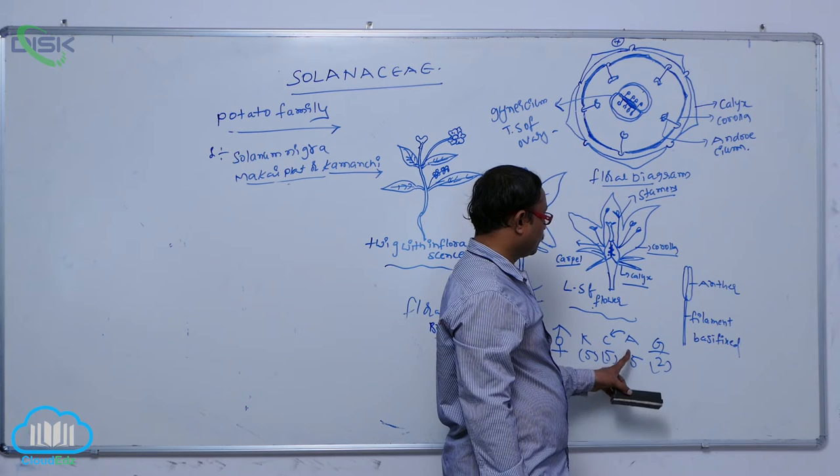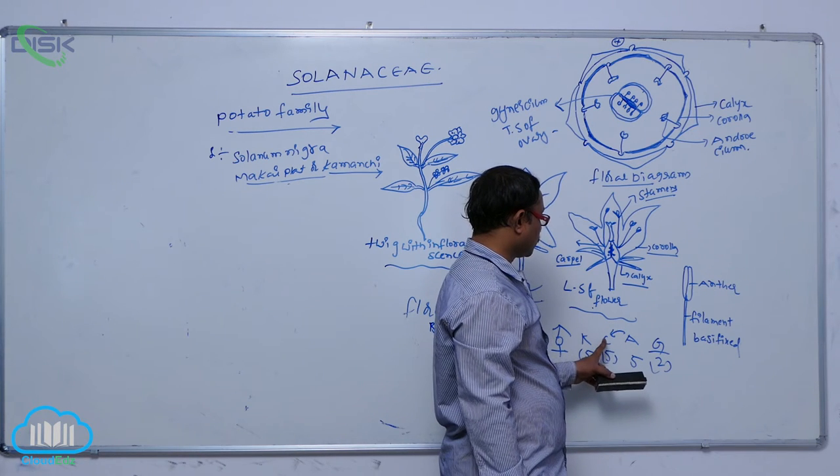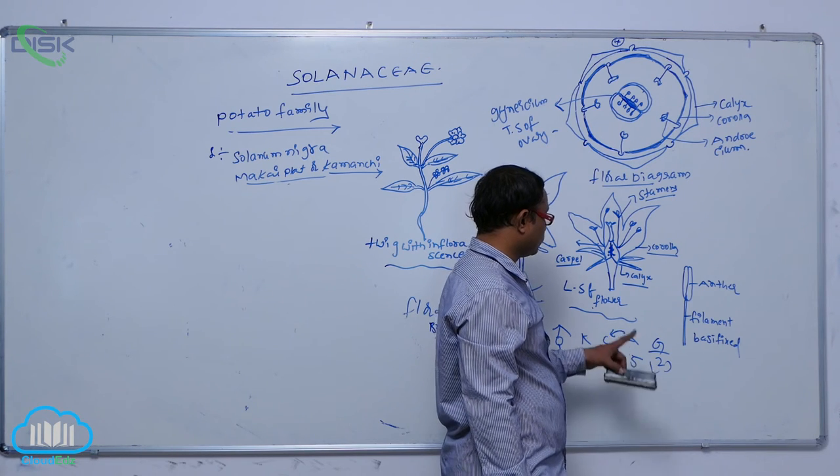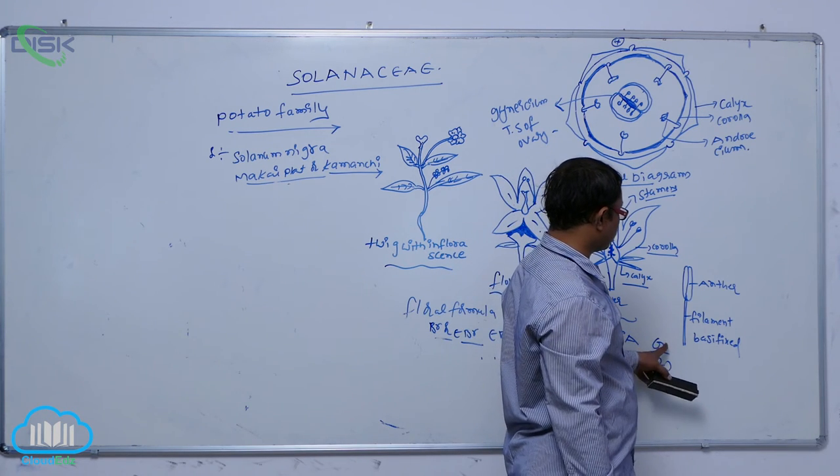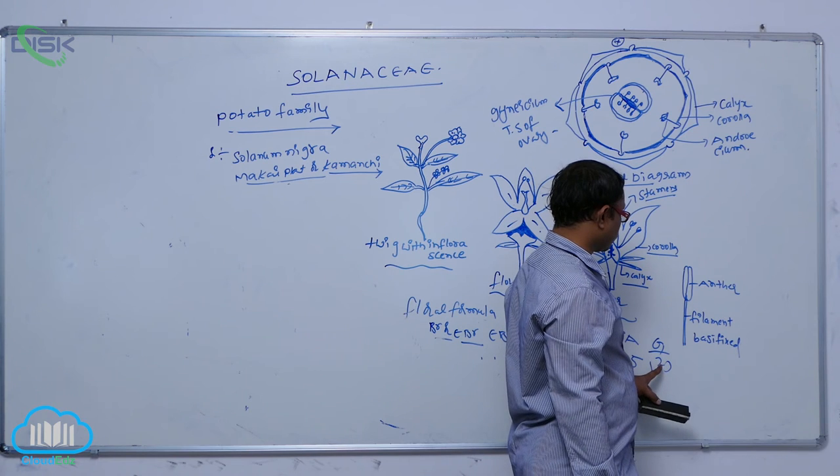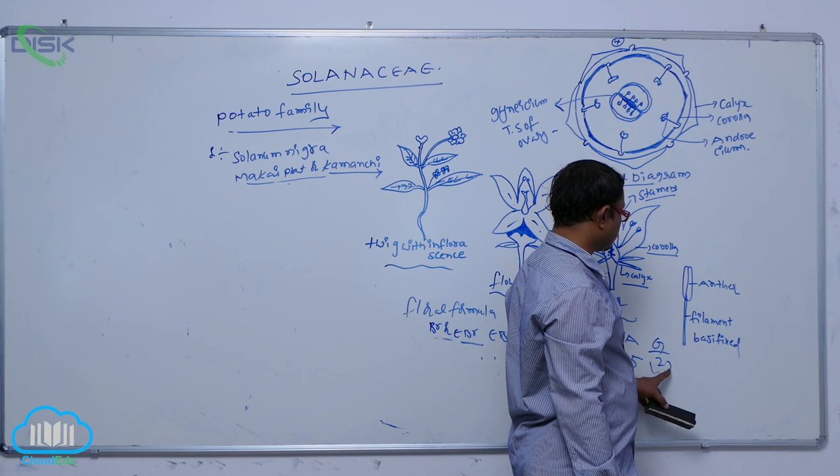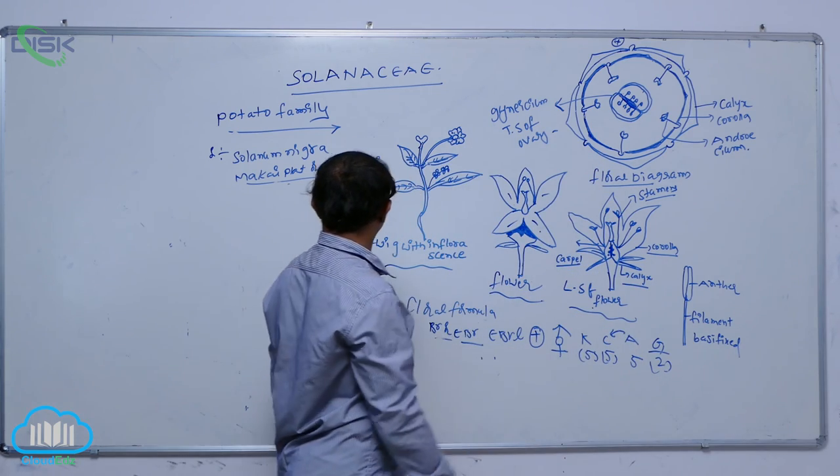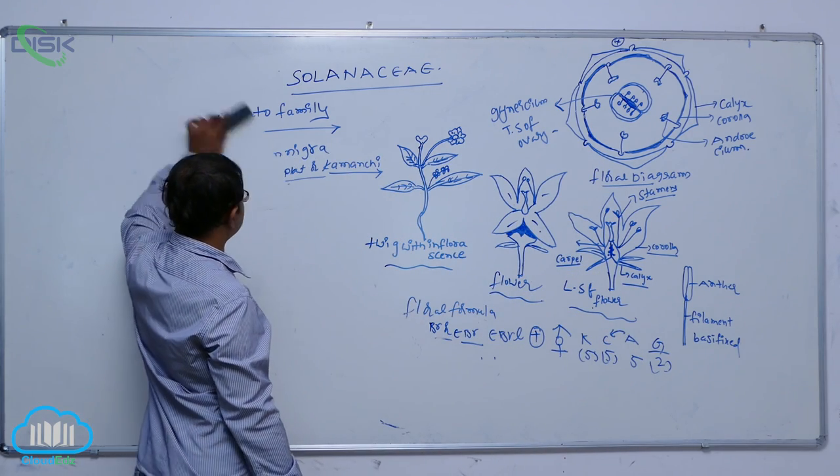Stamens are five, free. They are attached to that corolla. That's why showing of that epipetalous condition. It is known as that gynecium. So gynecium having that two carpels, fused and superior ovary. So that is all complete about that Solanaceae family.